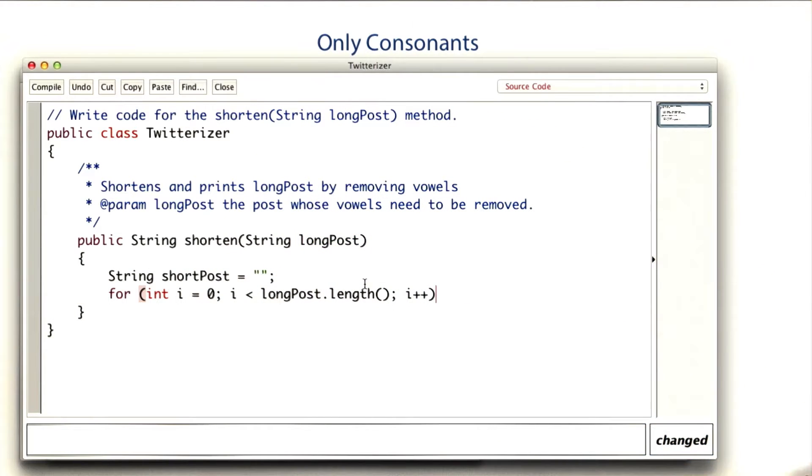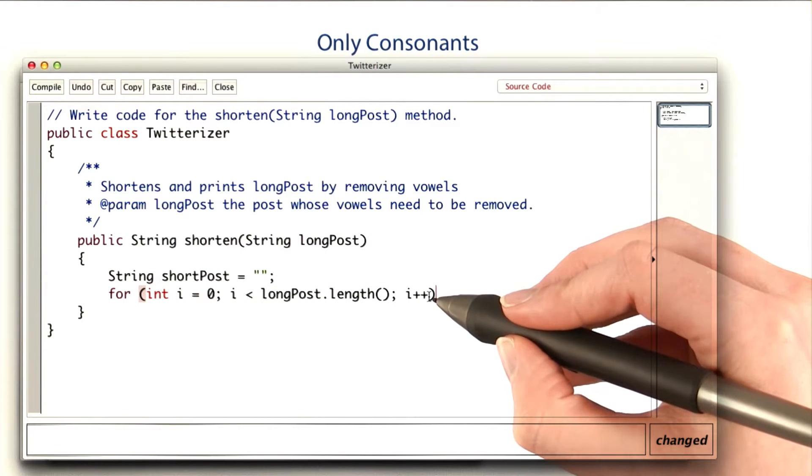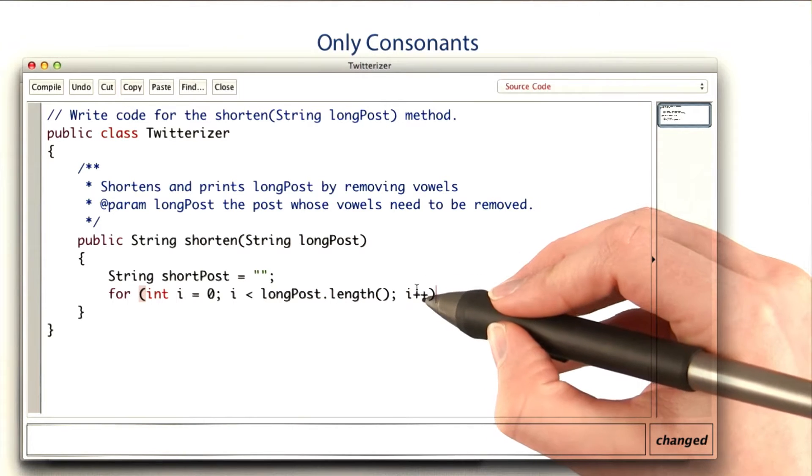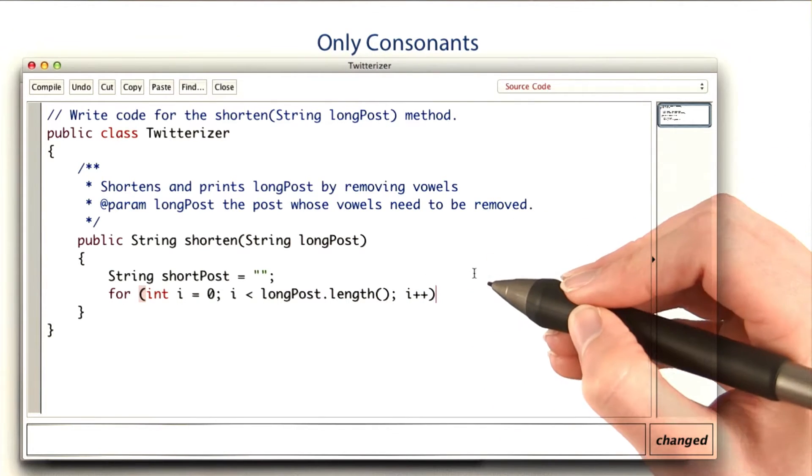So I'll start out with a string short post. And I'll go one letter at a time. I can't use the increment to skip the vowels, because I don't know which ones are vowels until I check.